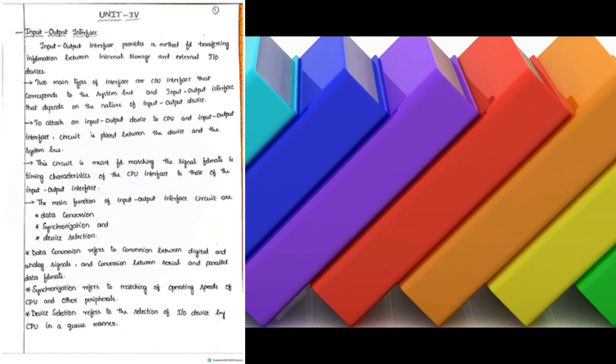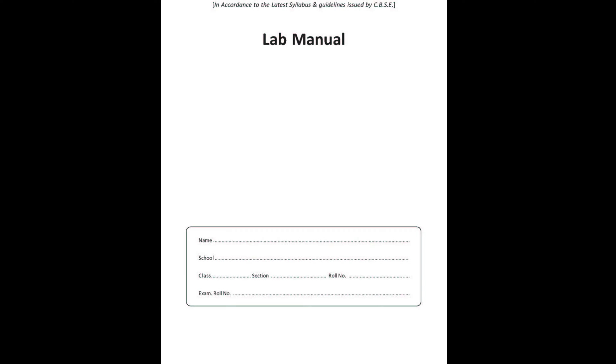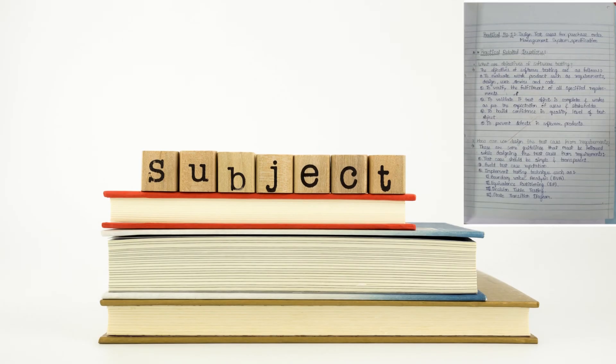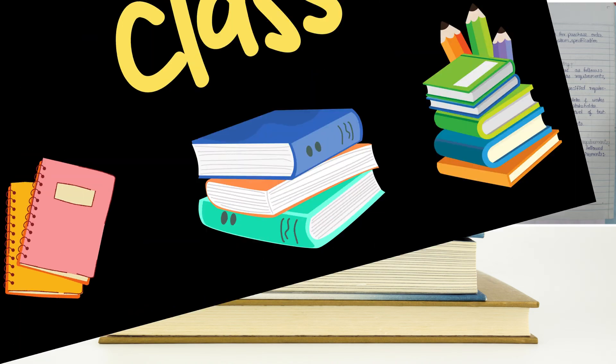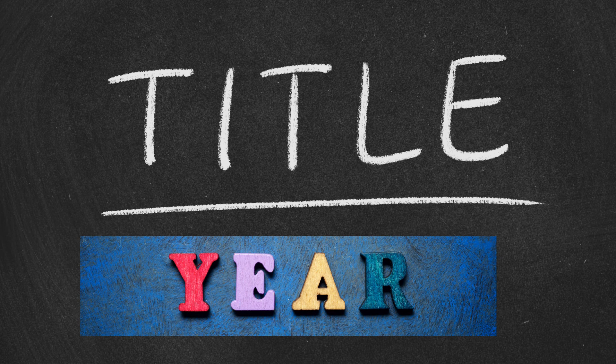A well-organized lab manual should have the following sections for each experiment or practical. Title page: name of the school or institution, subject, class, and lab manual title and year.